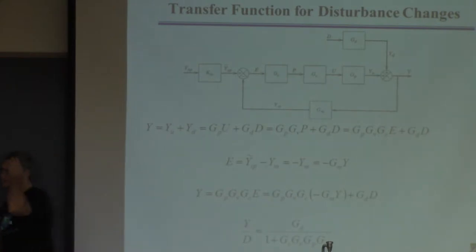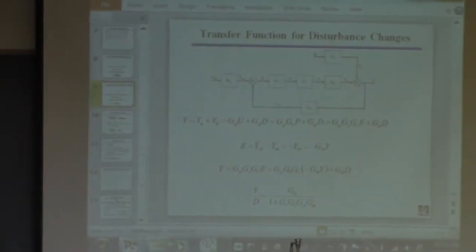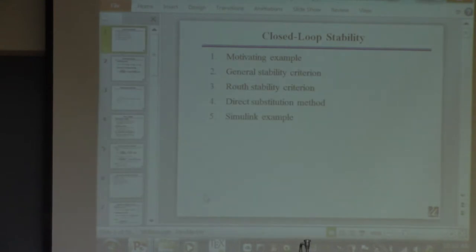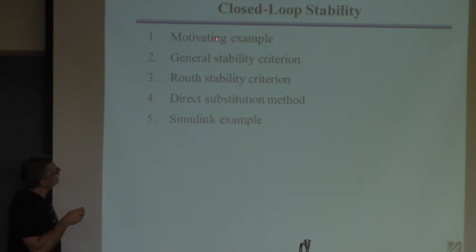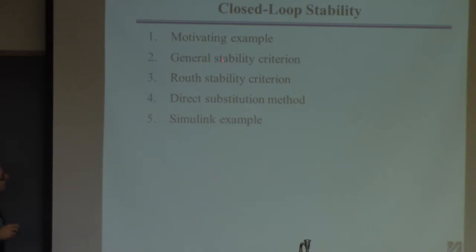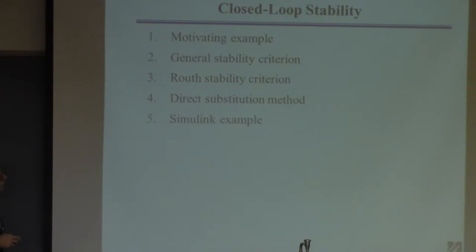What we're trying to do in this lecture is determine how to design the controller so the closed-loop system is at least stable — everything in the block diagram is specified except the controller. We're not computing the response; we're doing something less: just making sure it's stable. I'll start with an example, give a general result, then show you two easy-to-implement tests, and go over a Simulink example at the end.